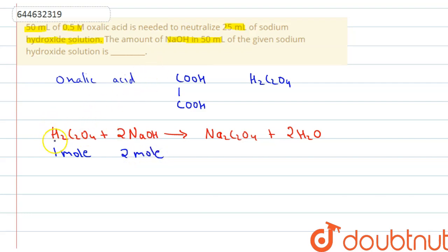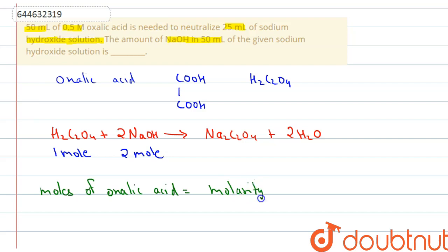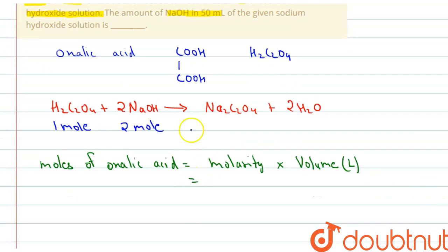First we will find out how many moles of H₂C₂O₄ we have. We have the volume and molarity of oxalic acid, so moles of oxalic acid = molarity × volume. Volume must be in liters, so molarity is 0.5 and volume is 50 ml, which is 50 × 10⁻³ liters. Therefore, moles of oxalic acid = 25 × 10⁻³ moles.